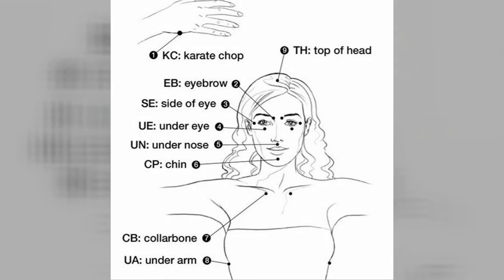If we remember and we are a little unwell and just want to get ourselves treated by ourselves only, then how we can do it. Here are the points: eyebrow, side of eyebrow, under eye, under nose, chin, collarbone. And this point — under the arm, here, where our bra strap is. So, these are basically the points that we tap.